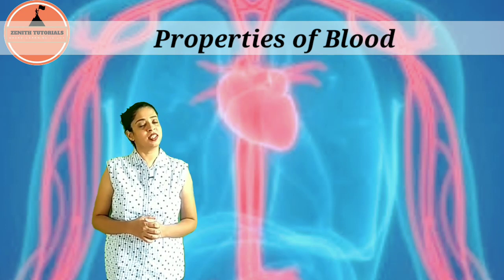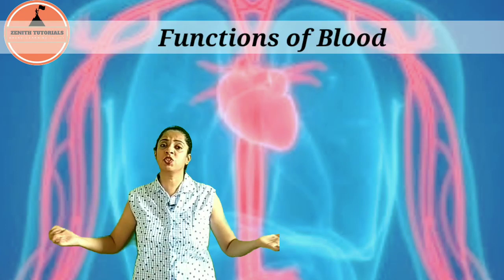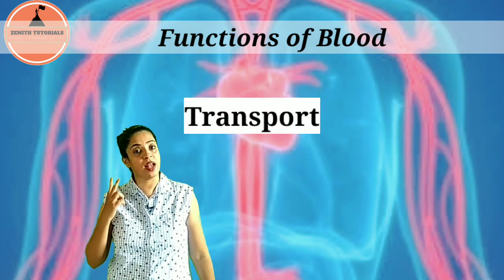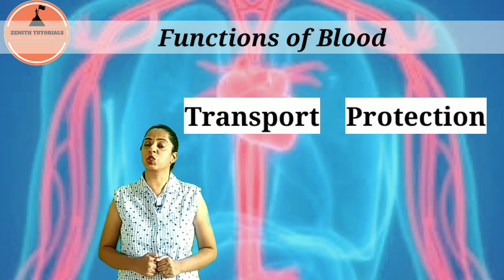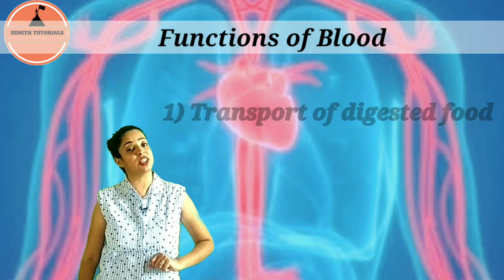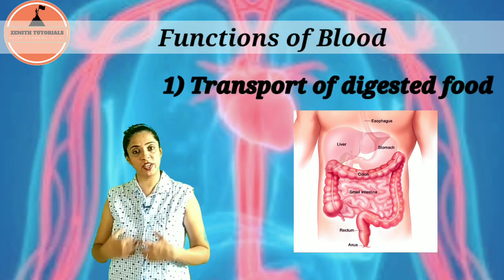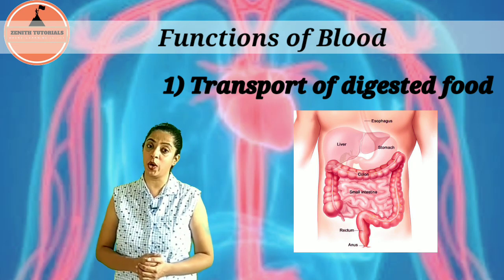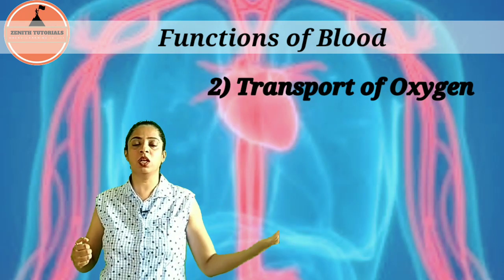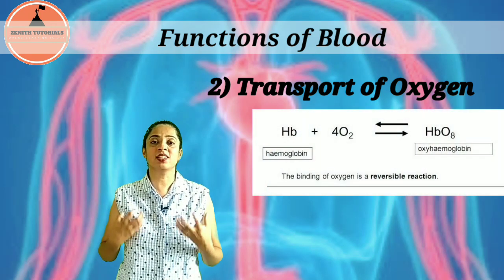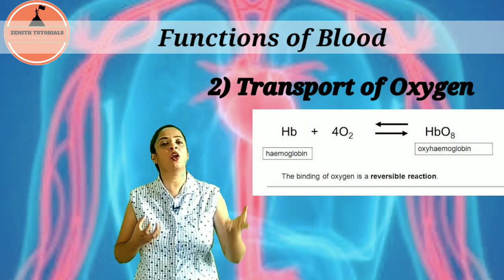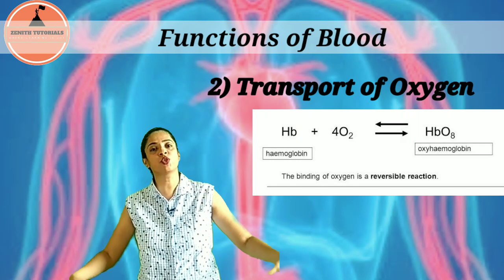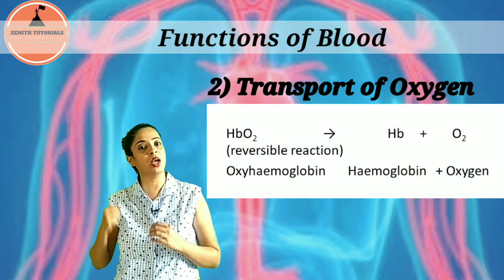After studying the properties of blood, let us look at the functions of blood. The functions can be studied under two broad categories: transport and protection. For transport — first is transport of digested food: nutrients digested in the alimentary canal are absorbed into the blood and taken to each and every cell of our body. Second is transport of oxygen from the lungs to the tissues. Hemoglobin in the blood combines with oxygen to form oxyhemoglobin, and when it reaches different body tissues it breaks up and releases oxygen to that tissue.